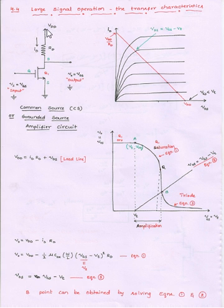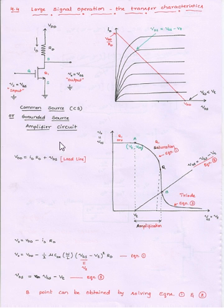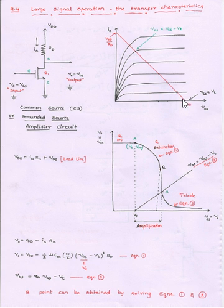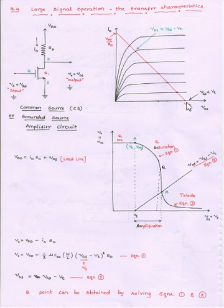Applying Kirchhoff's voltage law from VDD to ground, we obtain VDD equals ID·RD plus VDS. This is a straight-line equation. Representing this on the drain characteristics gives the load line shown in red. One endpoint is at VDS = VDD (when ID = 0), and the other endpoint is at ID = VDD/RD (when VDS = 0).